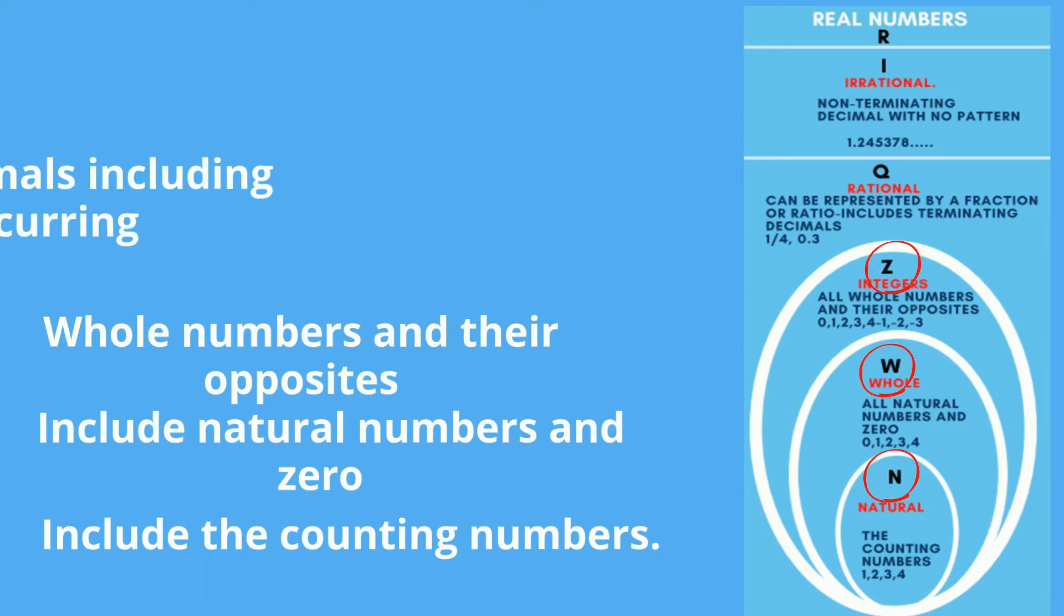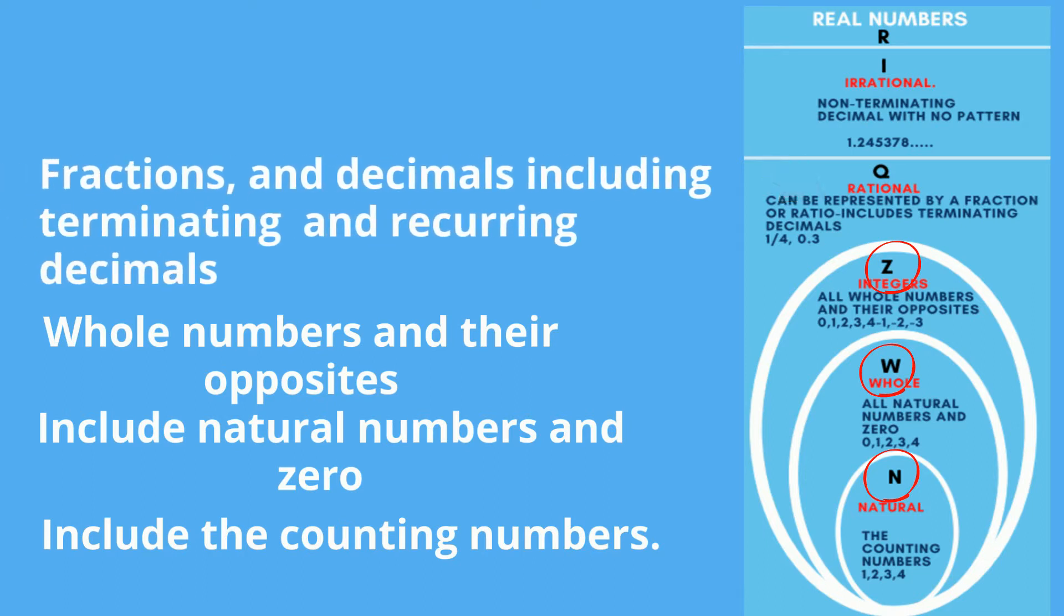Rational numbers can be represented as a fraction or ratio. They include fractions and decimals, including terminating decimals and recurring decimals.